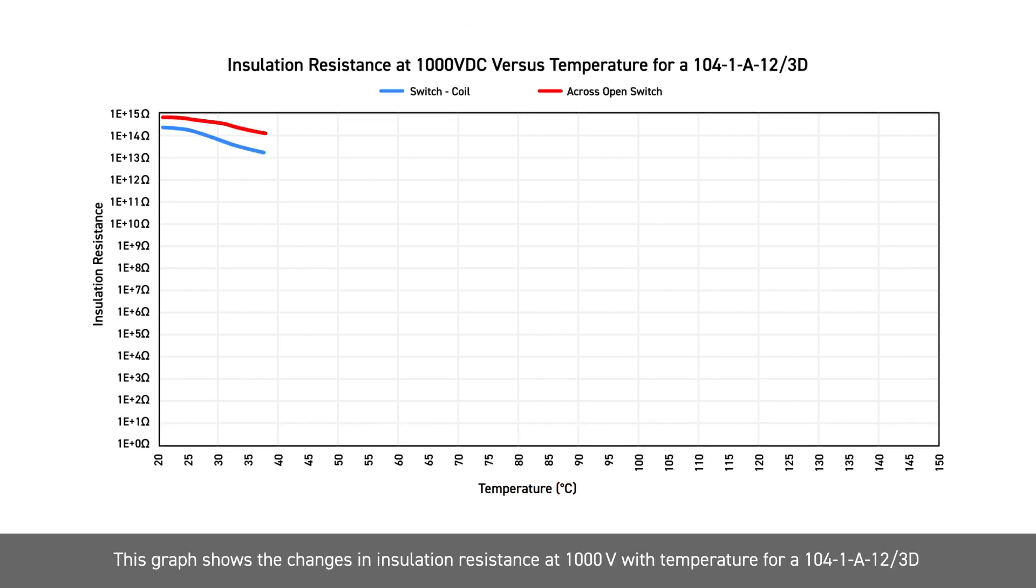This graph shows the changes in insulation resistance at a thousand volts with temperature for a 1041A123D.